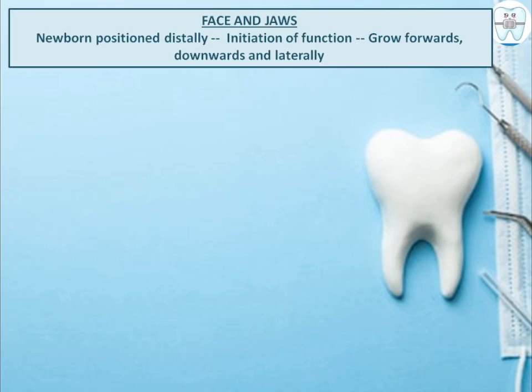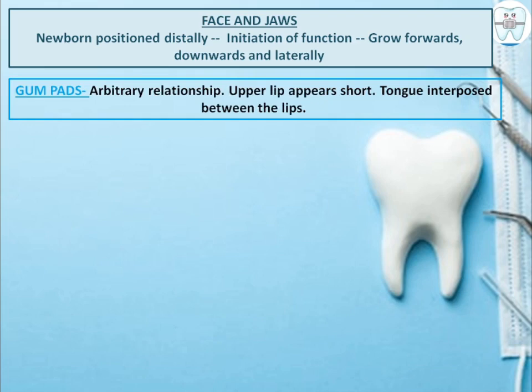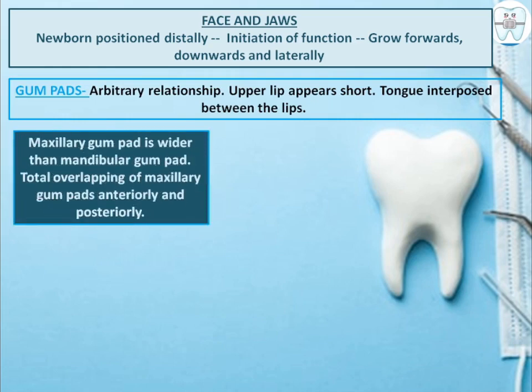A key feature is that in the newborn, the face and jaws are present distally. With the initiation of function, they grow forward, downward, and laterally. The upper lips are short, the tongue is interposed between the lips, and the maxillary gum pad is wider than the mandibular gum pad.